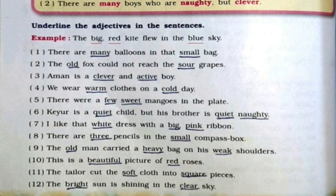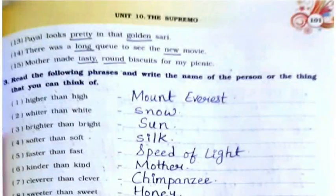Ninth: old, heavy, weak. Tenth: beautiful, red. Eleventh: soft, square. Twelfth: bright, clear. Thirteenth: pretty, golden. Fourteenth: long, new. Fifteenth: tasty, round.